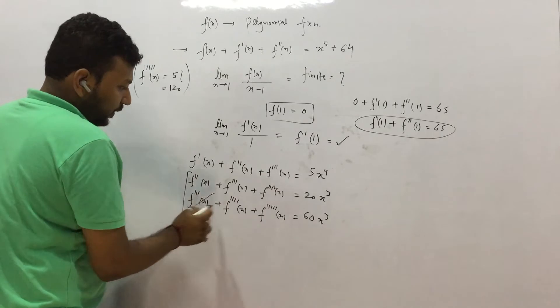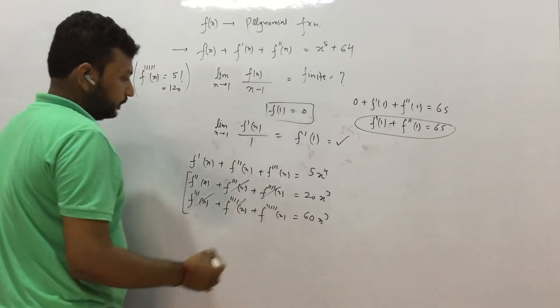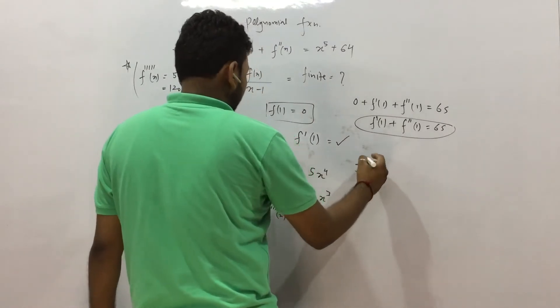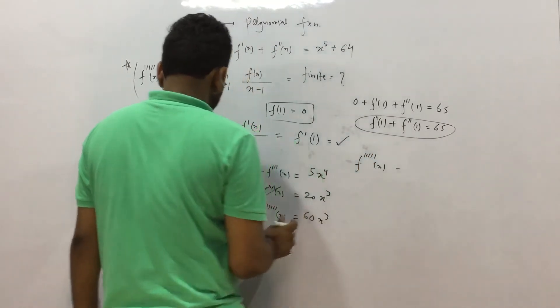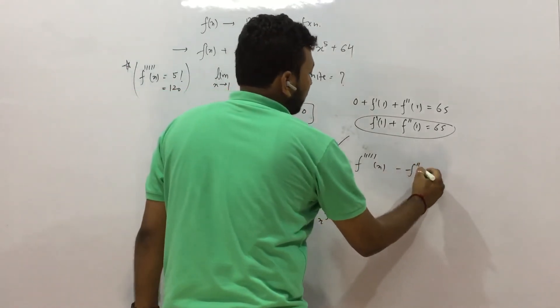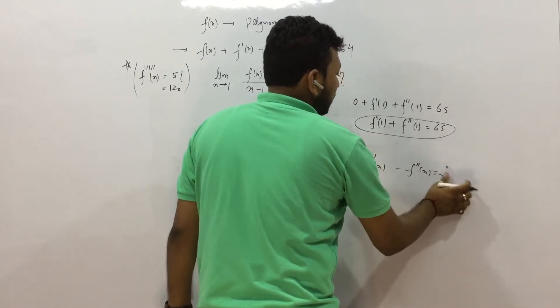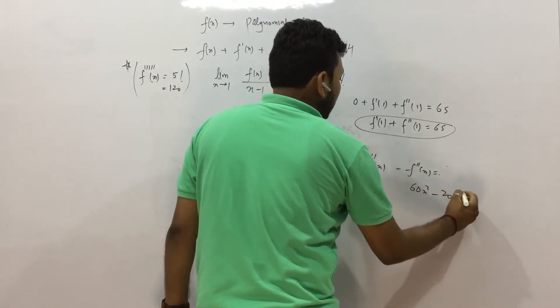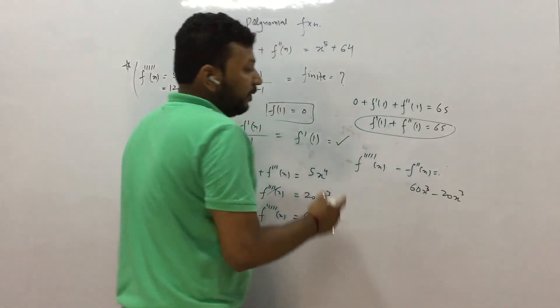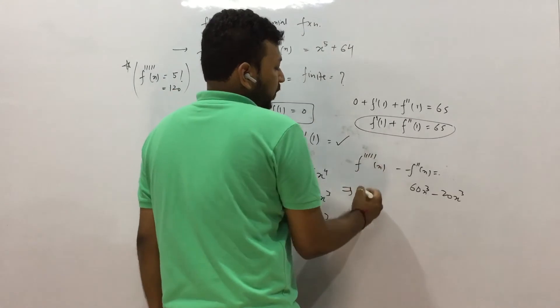Let us subtract these equations. And what we have? This gets cancelled, this gets cancelled. And what we have? We get f⁵(x) - f''(x) = 60x² - 20x². So that is 60x² - 20x², right? And we put x = 1. Now the question is solved. We put x² = 1.